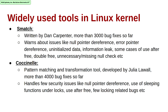Smatch, written by Dan Carpenter, tackles issues like null pointer dereference, error pointer dereference, uninitialized data, and some information leaks. However, it has a higher chance of false positives, around 30 to 40 percent. Because of this, the tool itself is not added into the Linux kernel for automated use, but it is widely used by Dan and some other developers periodically to detect issues. Dan also tries to run this tool over new patches submitted to the Linux kernel.